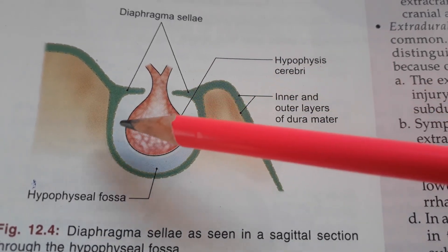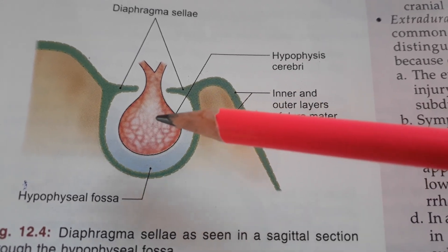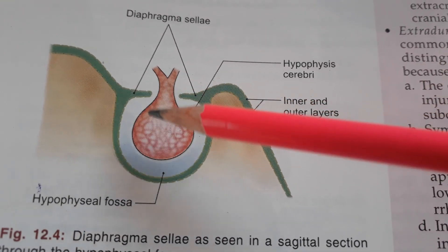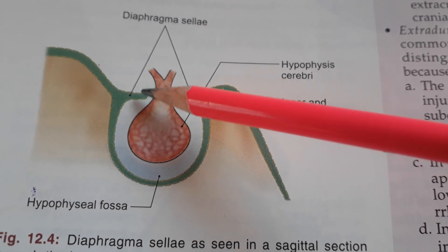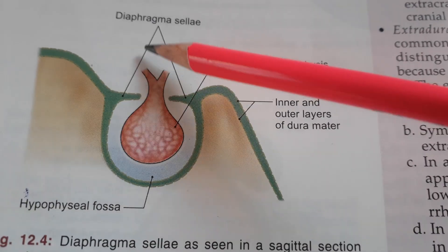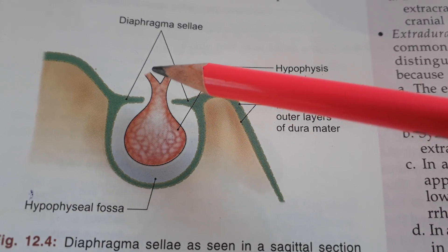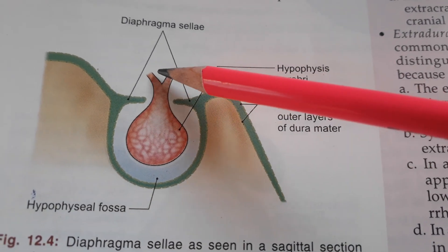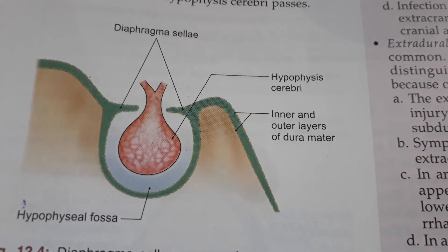Its measurements: it measures 8 mm anteroposteriorly, 12 mm transversely, and weighs about 500 mg. Regarding its relations, superiorly it is related to the diaphragma sellae, the optic chiasma, tuber cinereum, and also the infundibular recess of the third ventricle.